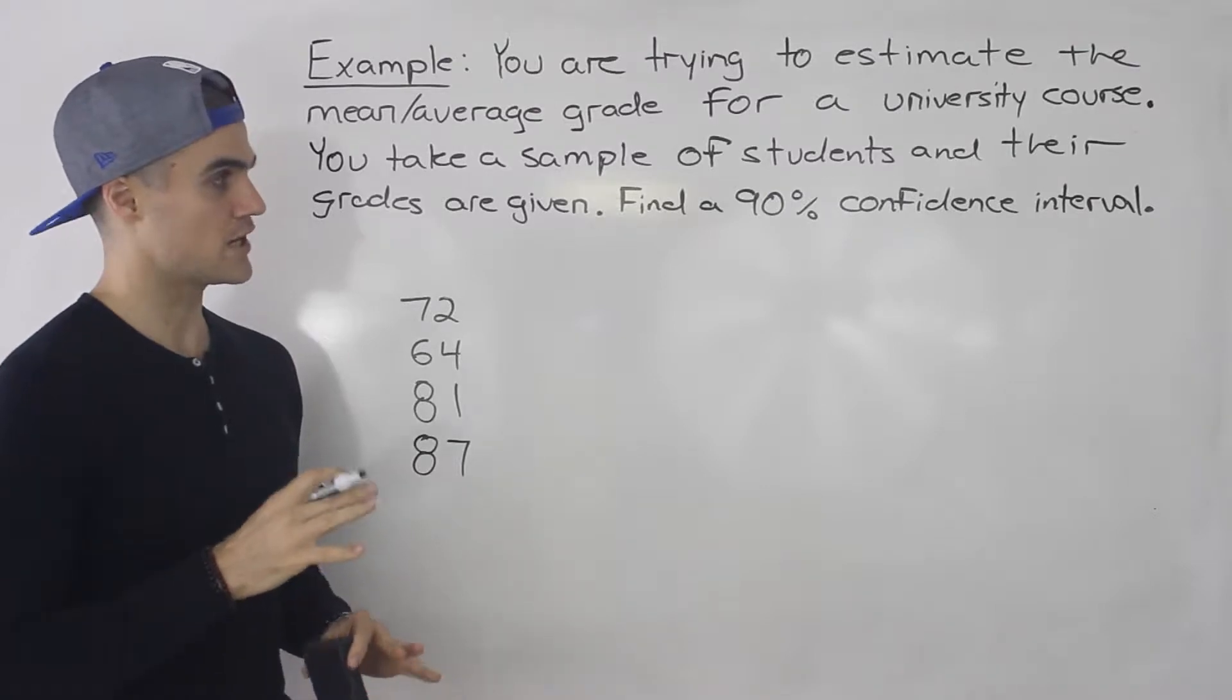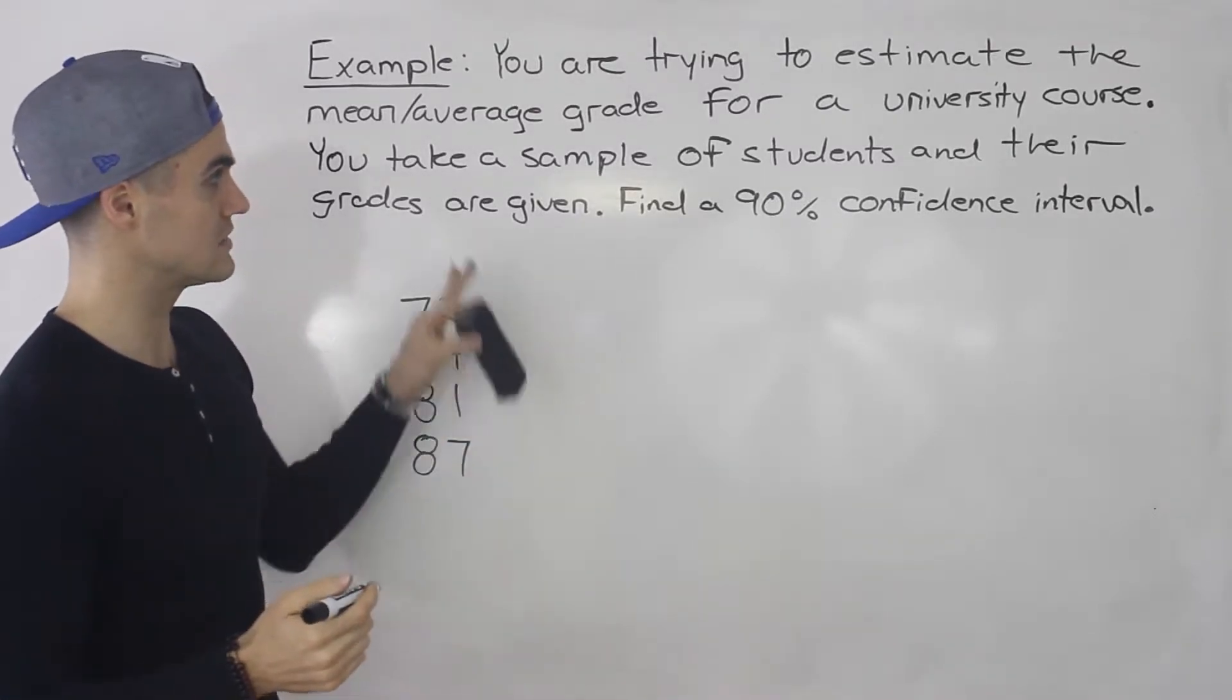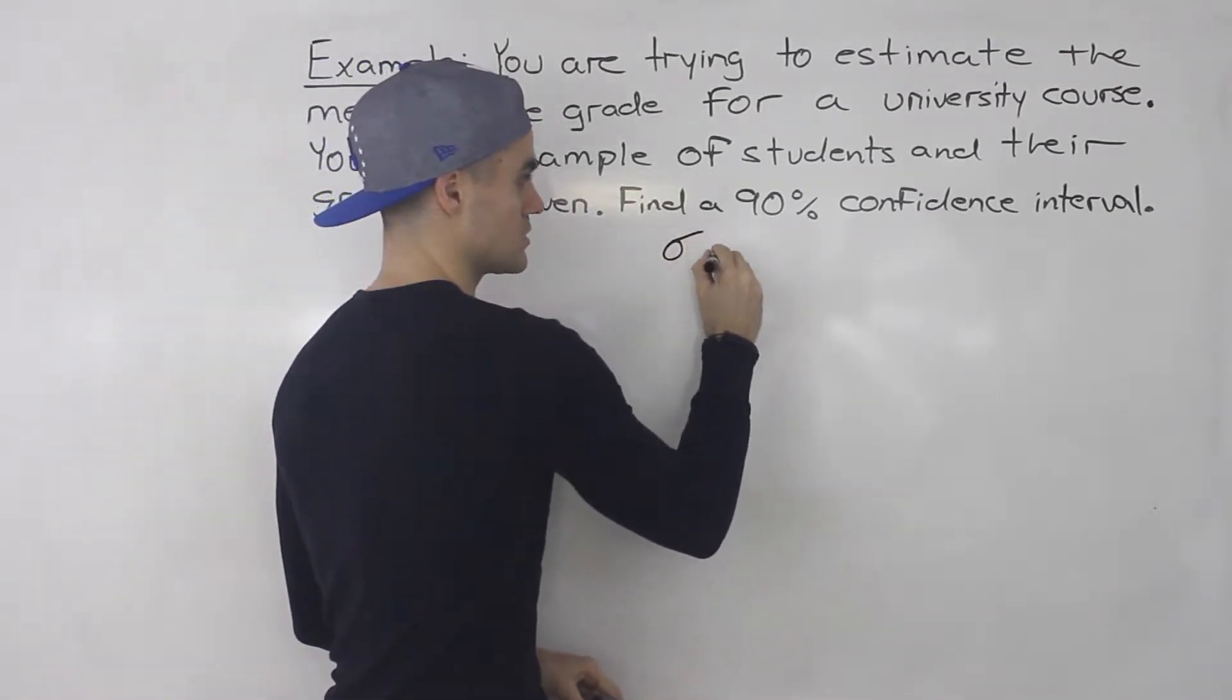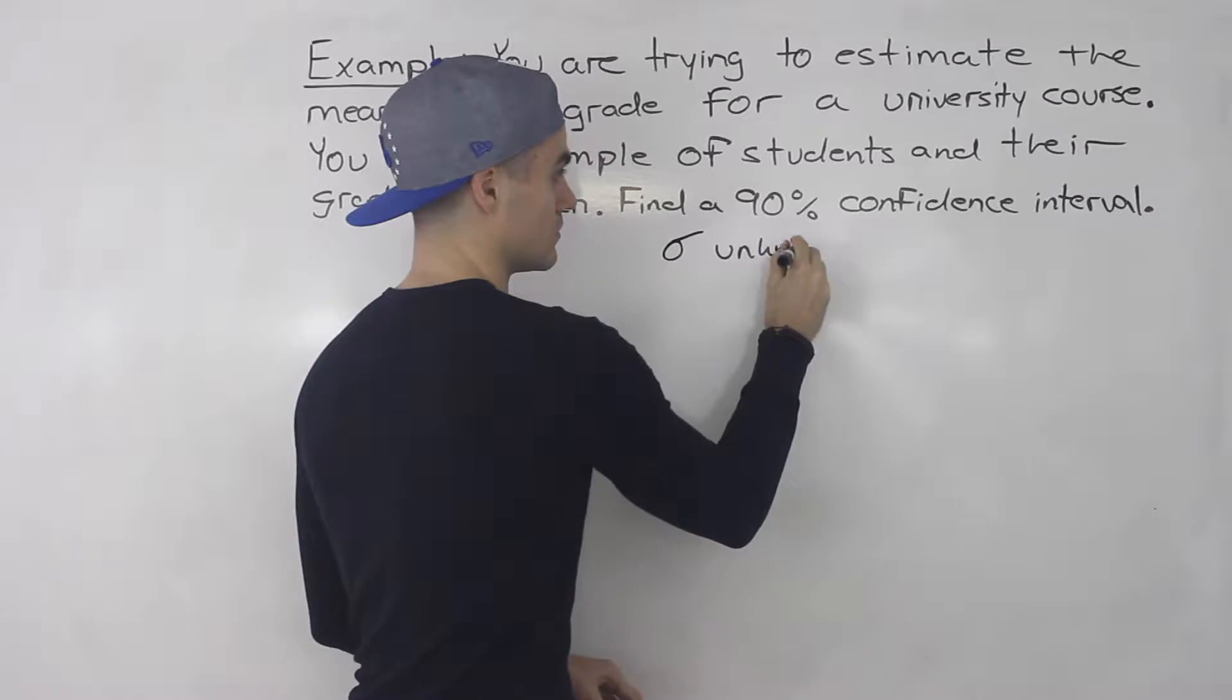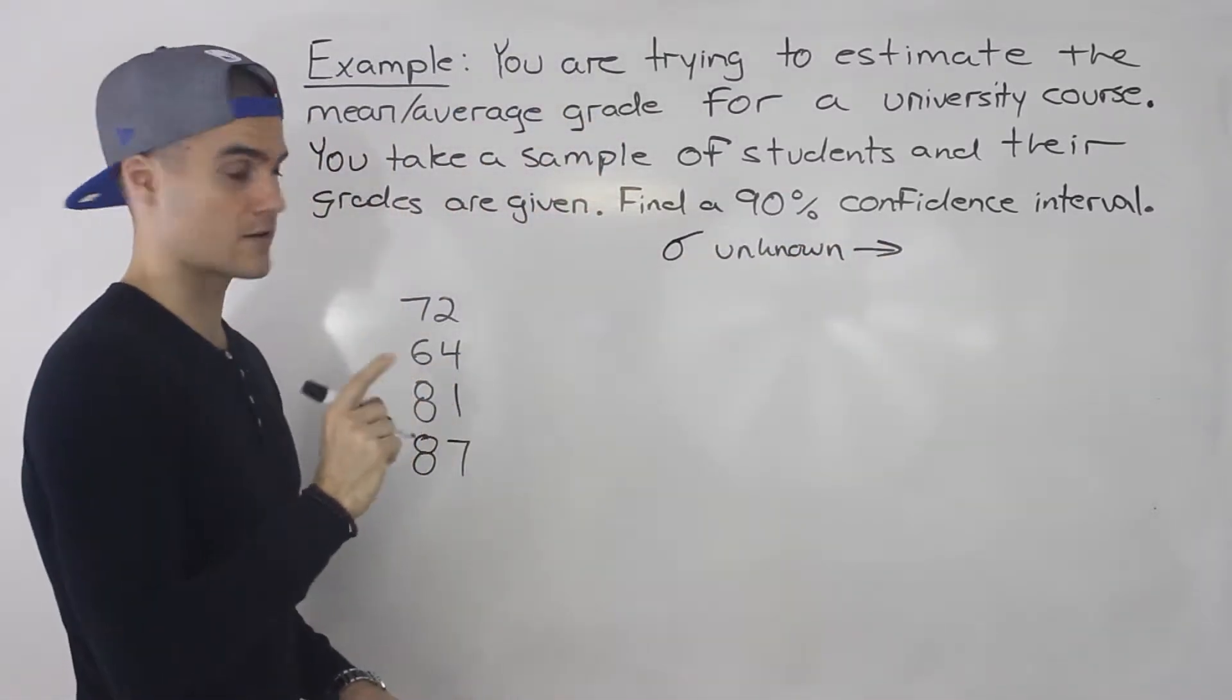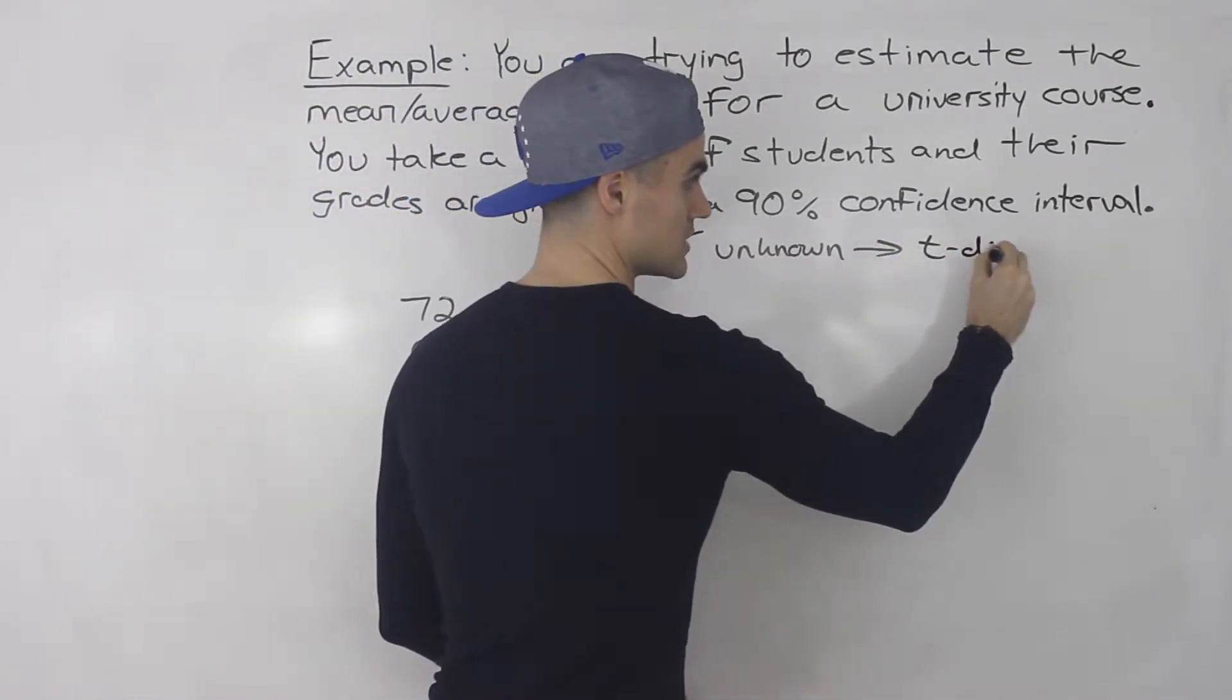So first thing you want to check, are you given a population standard deviation or not? And notice in this case we are not given the population standard deviation, so it is unknown. And when the population standard deviation is unknown, we know we have to use the t distribution.